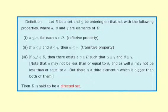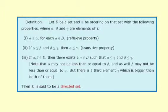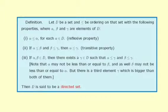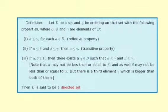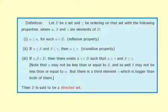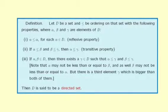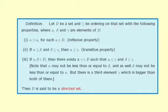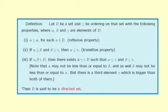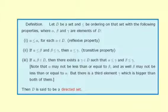Let D be a set and ≤ an ordering on that set with the following properties for α, β, and γ elements of D. Property 1: α ≤ α for each α in D — that is, the reflexive property holds. Property 2: if α ≤ β and β ≤ γ, then α ≤ γ — that is, the transitive property holds.